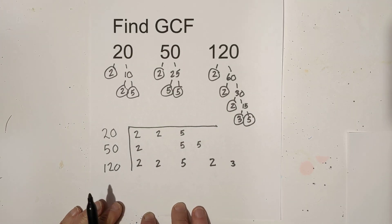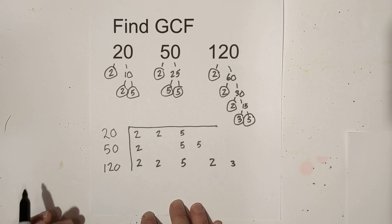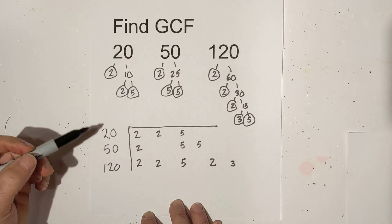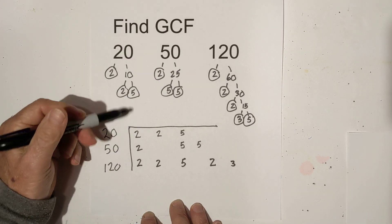So now I have the chart or the box or whatever you want to call it set up. And so here's all you do for the greatest common factor. Since you have 3 numbers, you have to have 3 numbers in a column.